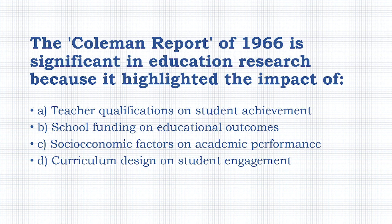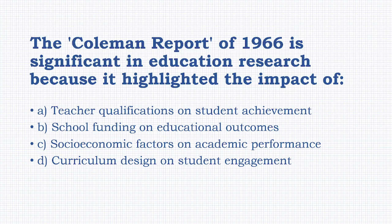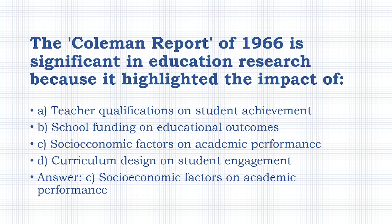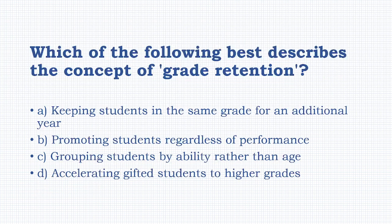The Coleman Report of 1966 is significant in education research because it highlighted the impact of: teacher qualifications on student achievement, school funding on educational outcomes, socioeconomic factors on academic performance, or curriculum design on student engagement. The answer is option C: socioeconomic factors on academic performance.